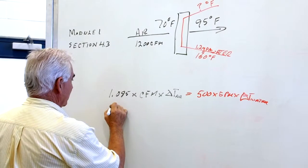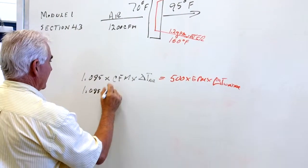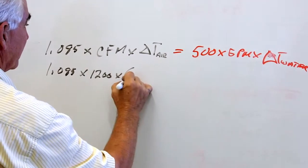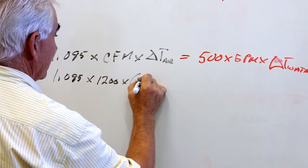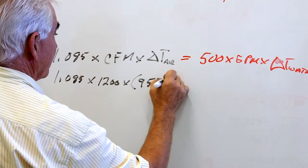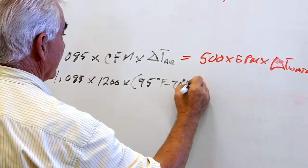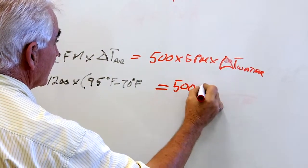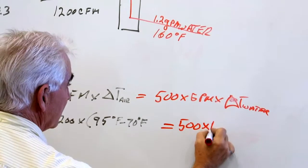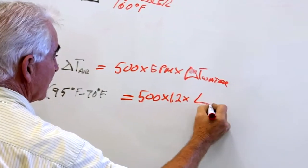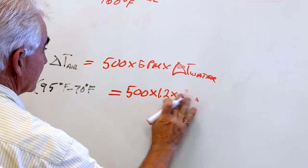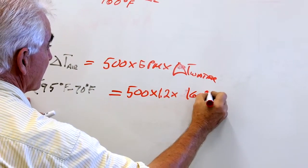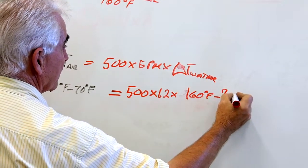So we'll have 1.085 times the CFM, which is 1200, times the delta T of the air, which is 95 degrees Fahrenheit minus 70 degrees Fahrenheit. That is equal to 500 times the GPM, which is 1.2, times the delta T of the water, which is 160 degrees Fahrenheit minus the unknown leaving water temperature.